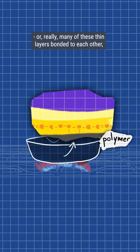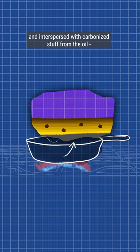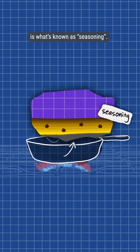This thin layer, where really many of these thin layers bonded to each other and interspersed with carbonized stuff from the oil, is what's known as seasoning.